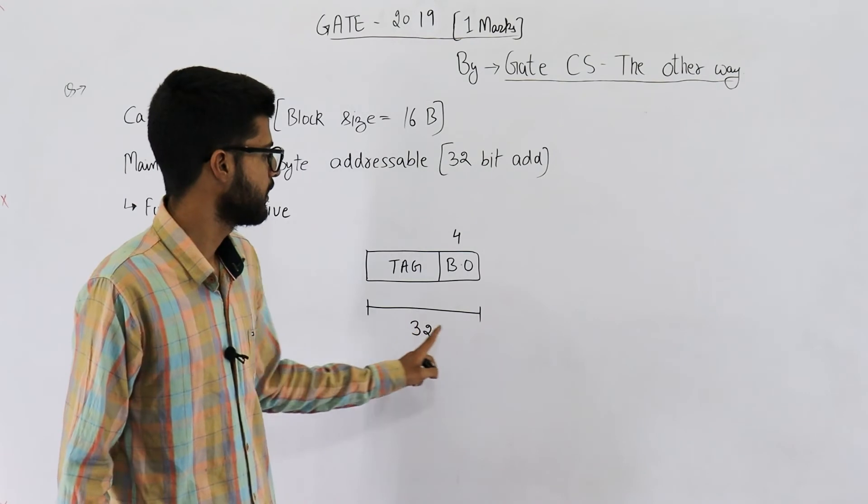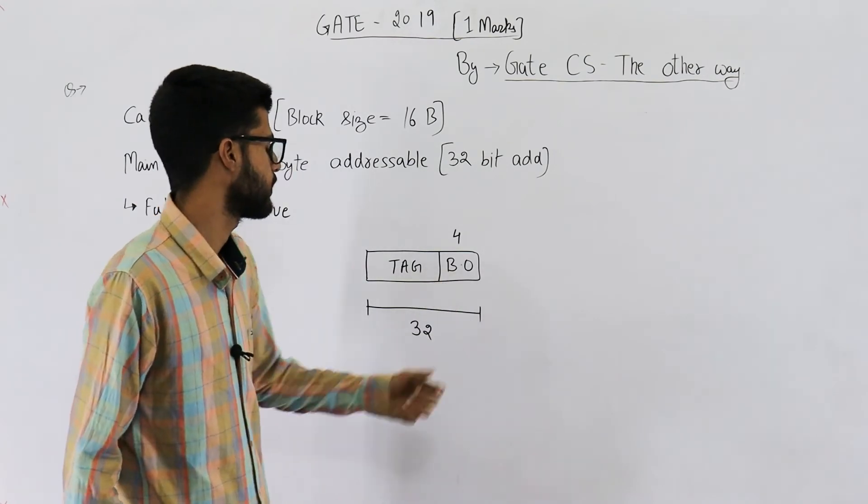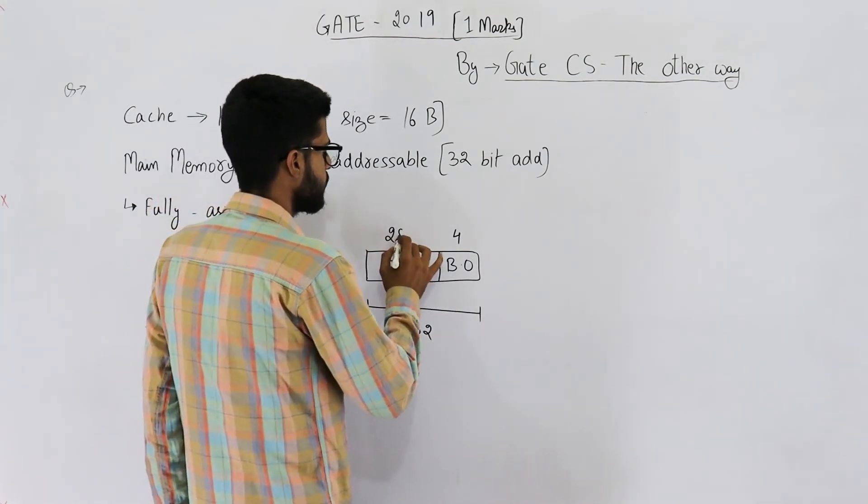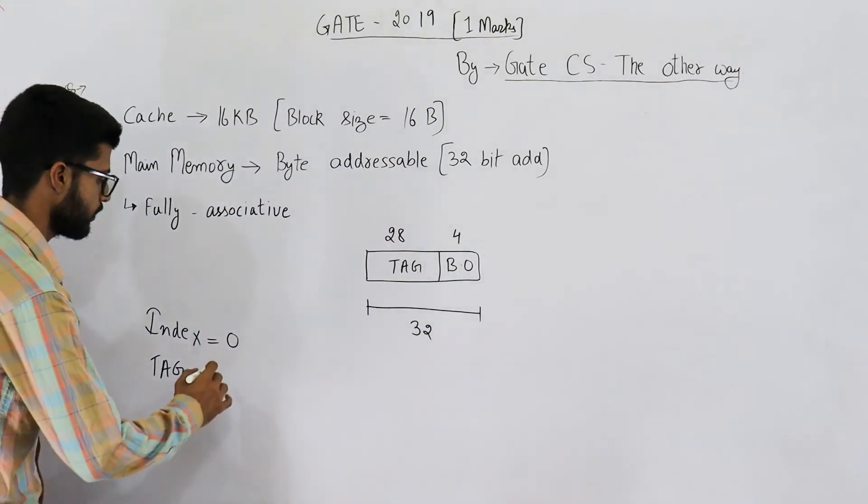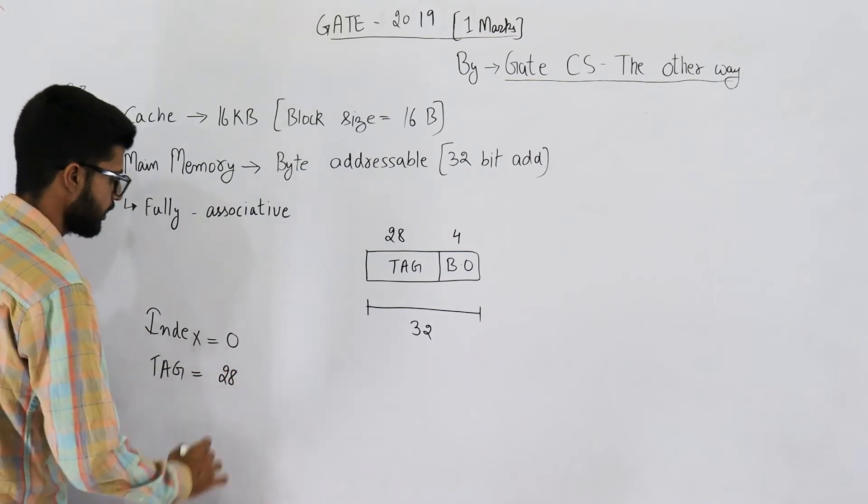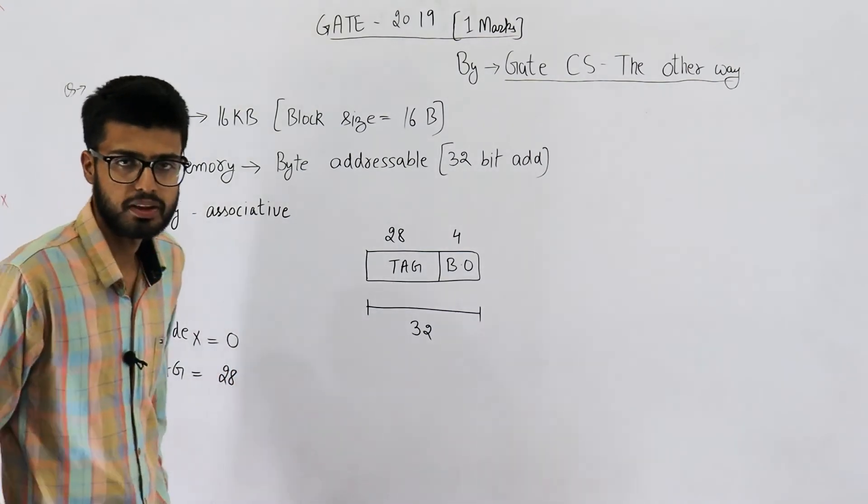Now 32 bits is total. This much is 4 bits. Tag will be of 28 bits obviously because 32 minus 4 is 28. So your answer is tag is 28 bits and index is 0 bits.